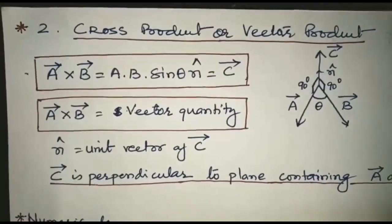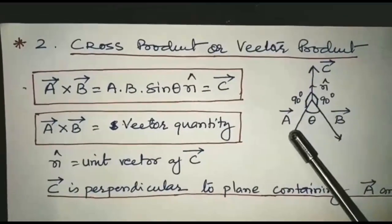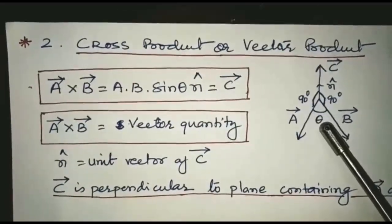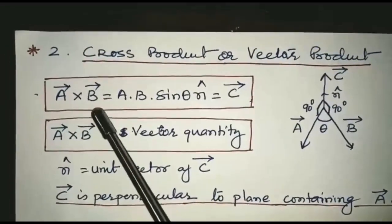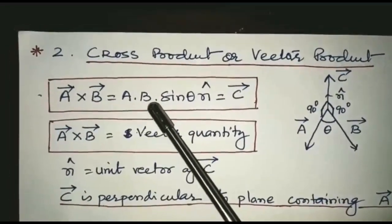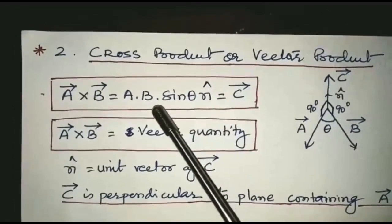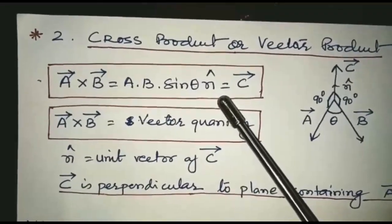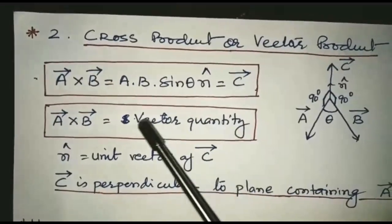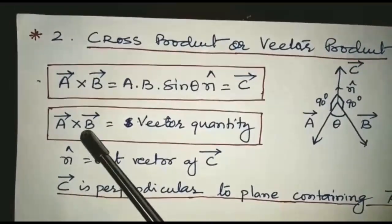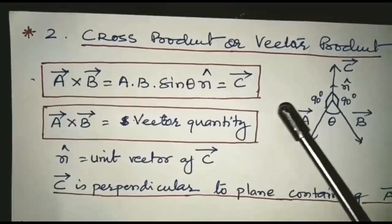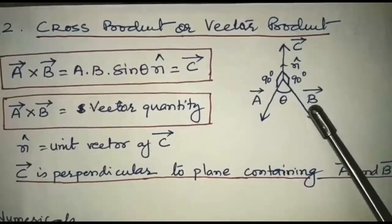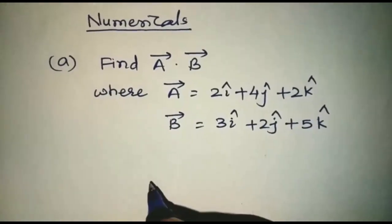Second vector operation is known as cross product, which is also known as vector product. Consider two vectors, vector A and vector B. Let theta be the angle between two vectors. According to cross product, A cross B equals AB sin theta N cap, where A and B are the magnitudes of vector A and vector B, and N cap is the unit vector of vector C. Here A cross B gives a vector quantity, and the direction of this vector quantity is perpendicular to the plane containing vector A and vector B.